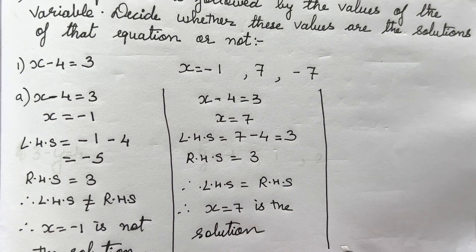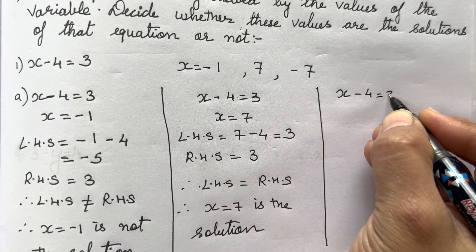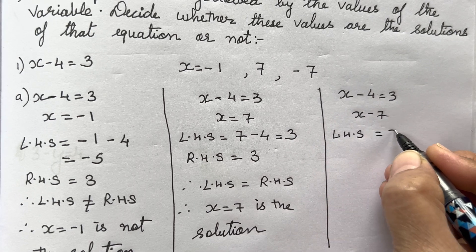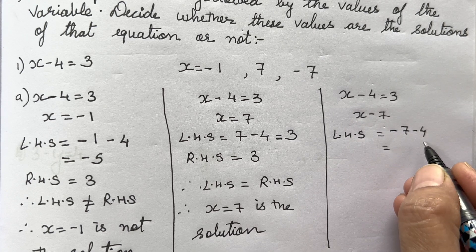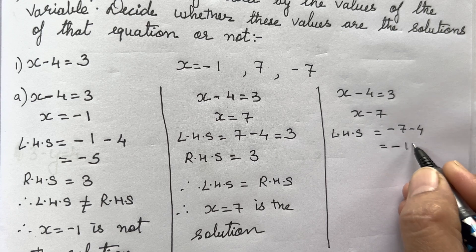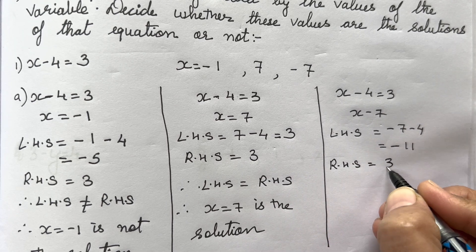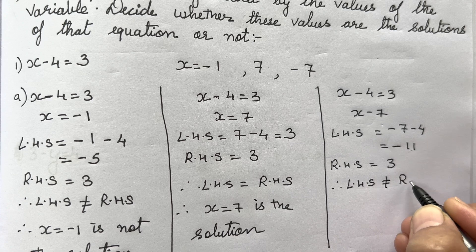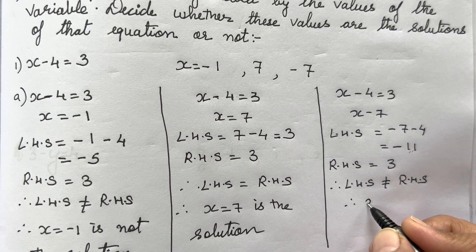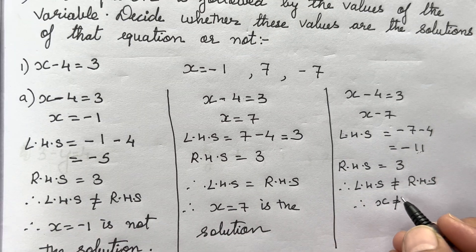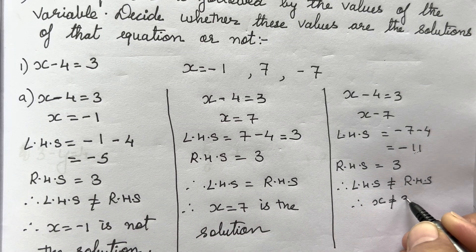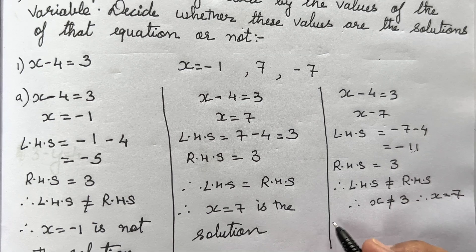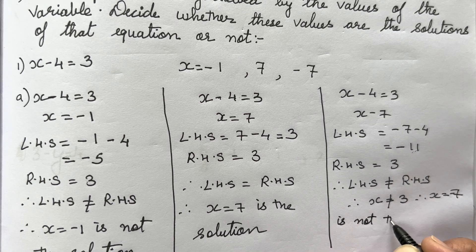Again the same equation, but the value of x is -7. Left Hand Side is -7 minus 4. Minus and minus becomes plus, so the answer is 11. Right Hand Side is 3. Both answers are different, so Left Hand Side is not equal to Right Hand Side. Therefore x = -7 is not the solution.